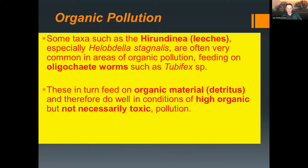Organic pollution is a common source of problems in water bodies. It can occur artificially from farm slurry or sewage outputs, or naturally — if you have a stream going through a woodland or a pond near trees, you get organic pollution from leaf fall, which is a natural situation but may decrease biodiversity. Some taxa such as the Hirudinaceae — the leeches — are often common in areas of organic pollution, feeding on polychaete worms, tube-dwelling species that feed on organic detritus. You get a food chain, but it's very limited — there might be a lot of it, but not much diversity.